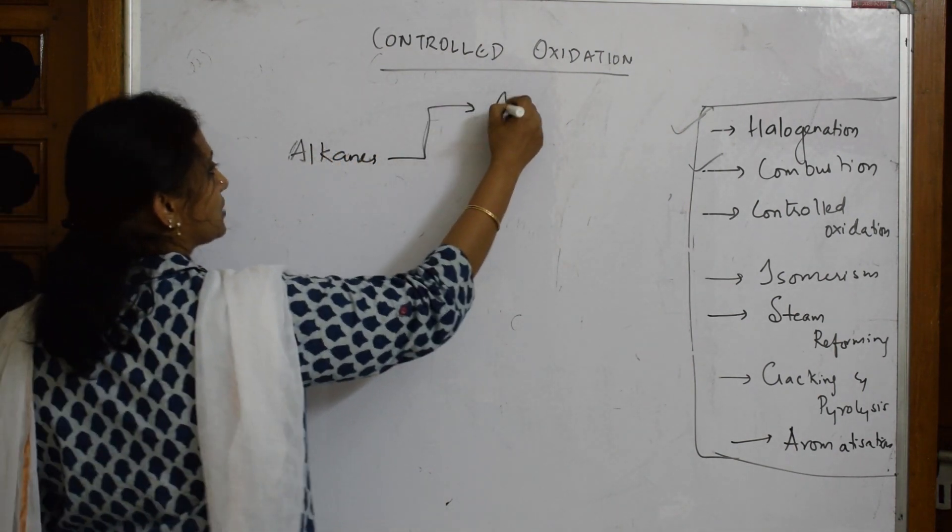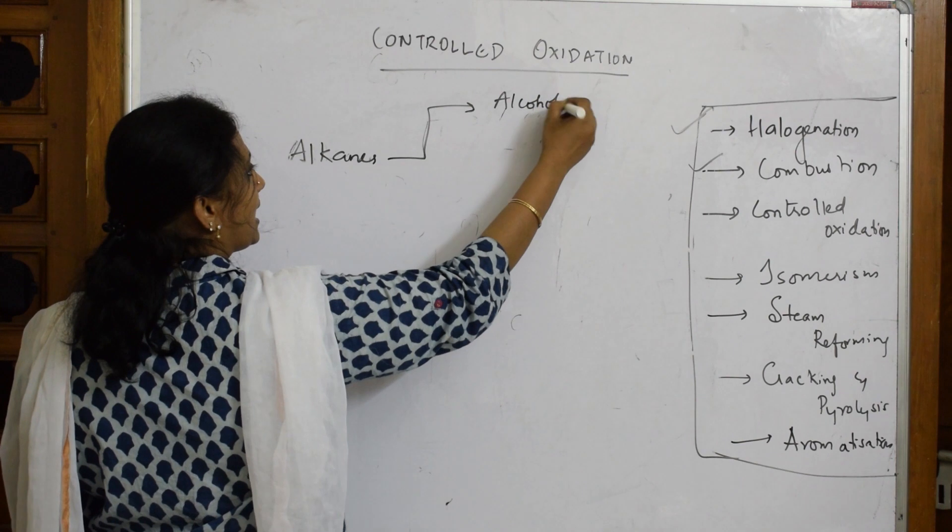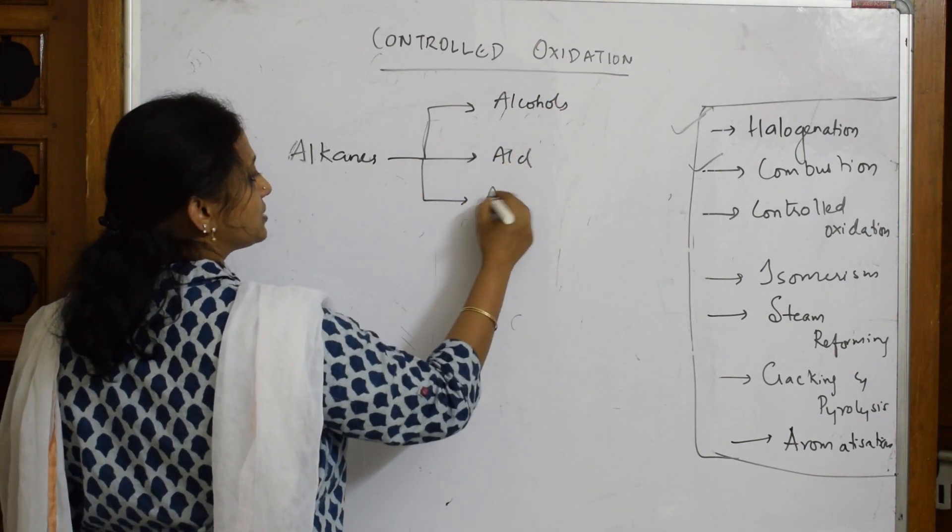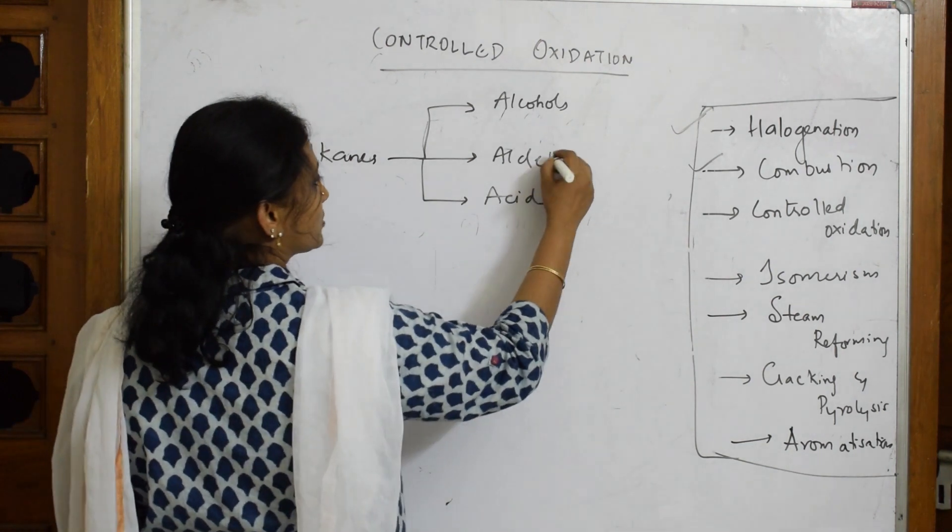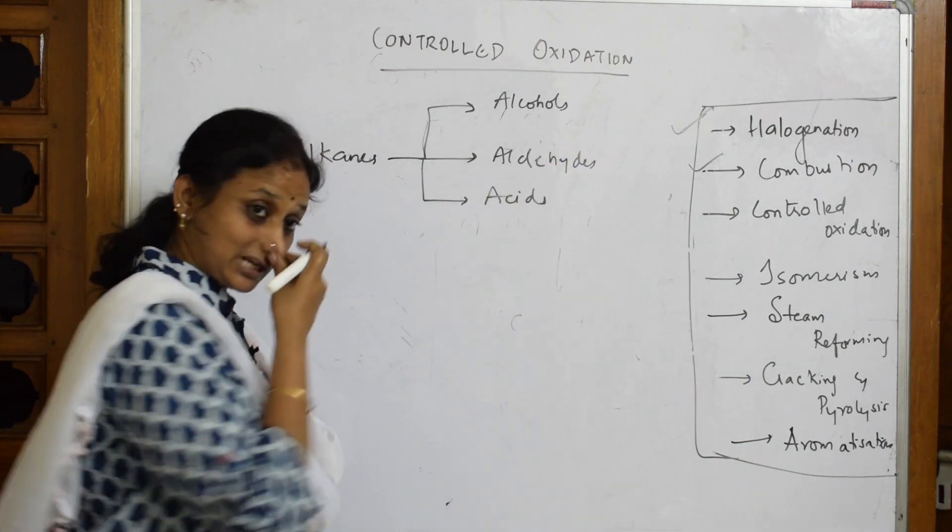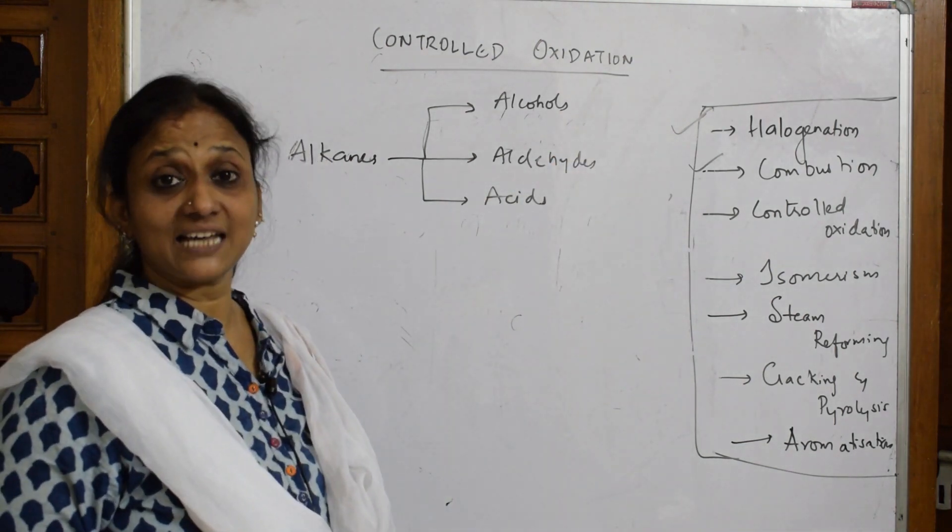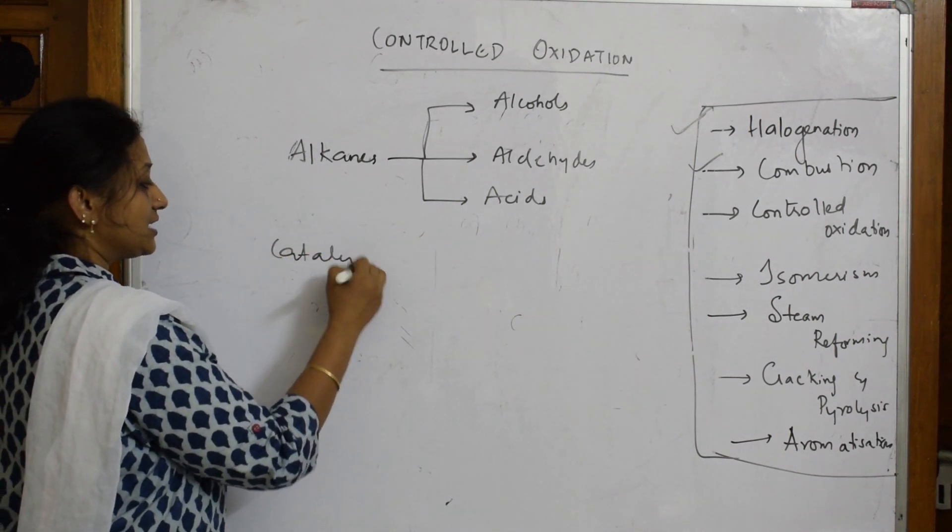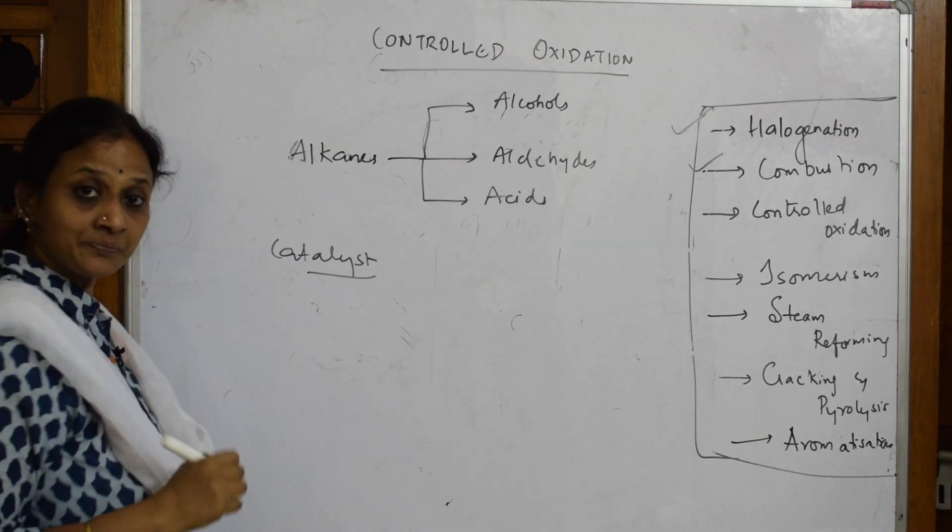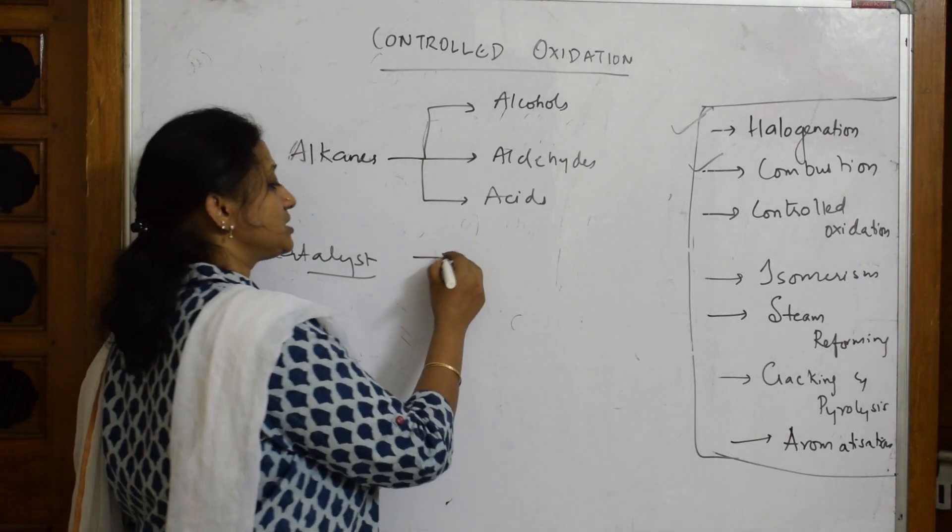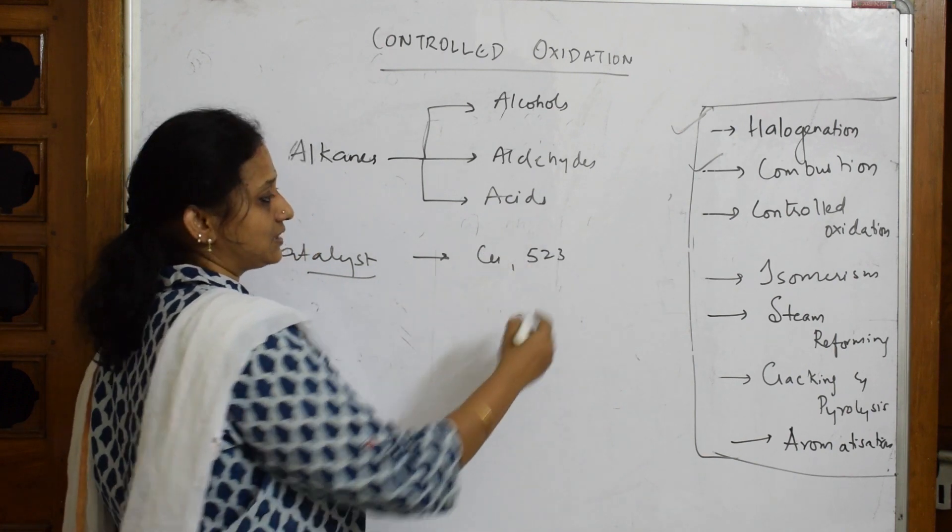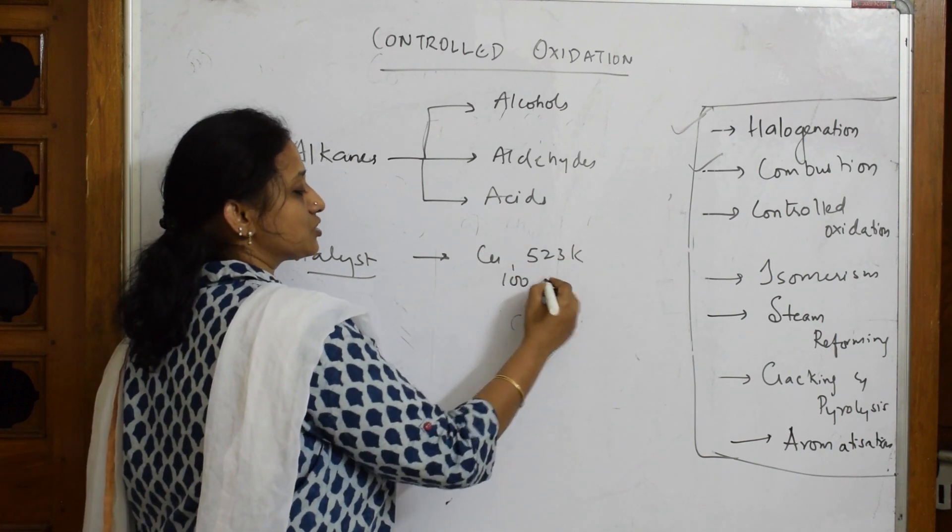Alkanes may be converted to alcohols, alkanes may be converted to aldehydes, alkanes may be converted to acids also. For such reactions, we require catalysts, very important. Catalysts enhance the speed of the chemical reactions. The catalyst which I am going to use here is copper at 523 or 525 Kelvin, 100 atmosphere pressure.